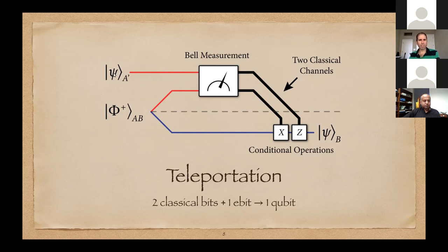At the end of the process, the state is destroyed on Alice's end and reproduced on Bob's end. You can view this as a resource conversion: two classical bits and an ebit are consumed, and what's generated is a qubit channel. This also has a cryptographic aspect. If there's an eavesdropper tapping the classical bits, they cannot figure out anything about the state being transmitted. This has been employed in cryptographic protocols like measurement-device-independent quantum key distribution.